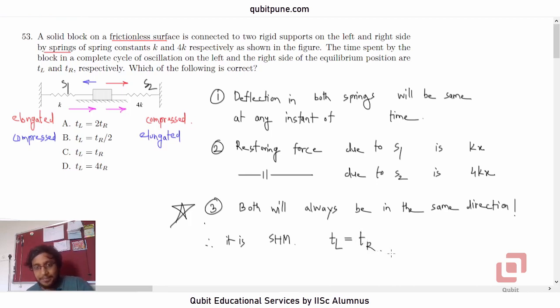So, TL is equal to TR. TL is equal to TR, and that is option C. That is option C. So, 53rd option C. In our next video, we will solve the next one, that is question number 54.